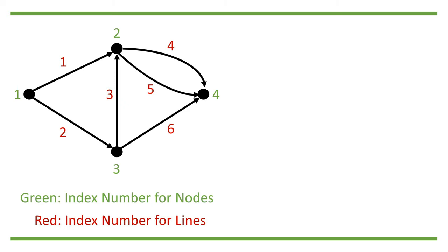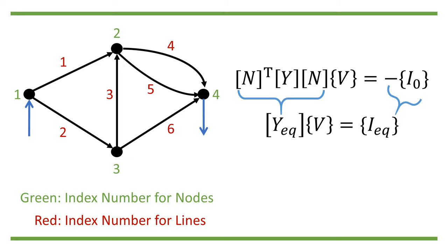Combining the compact forms of Kirchhoff's current law and Ohm's law, we get N transpose Y N V equals minus I_0, or Y_eq V equals I_eq.